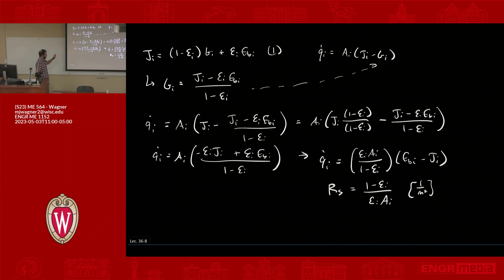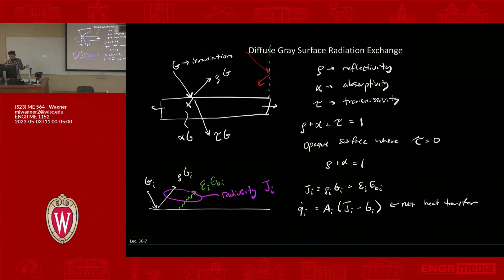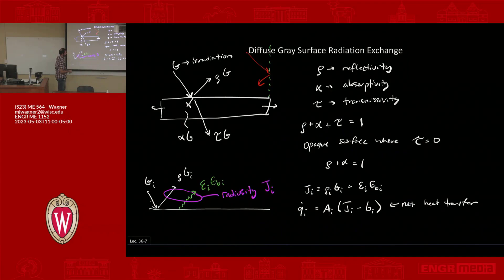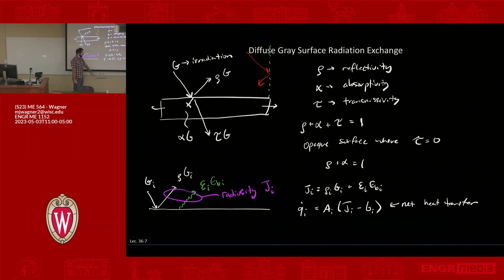We left off talking about resistance related to emissivity of the surface — we're talking about radiation exchange between diffuse gray surfaces. That brings in the irradiation G coming in, the reflected component rho times G, and the emitted power epsilon times E_B, the blackbody emissive power. The sum of those two things is the radiosity.